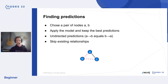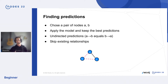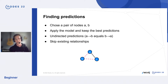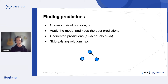To understand what happens when you have a model and want to find predictions: you choose a pair of nodes A and B, apply that node pair to the model, and it returns how likely a link between them is. We want the best predictions — the node pairs most likely to be connected. We treat this as undirected, so A→B and B→A are the same, and we skip existing relationships since we only care about new links.